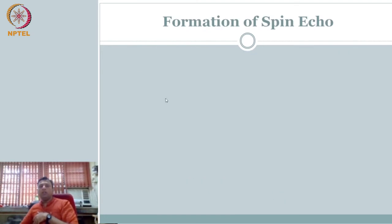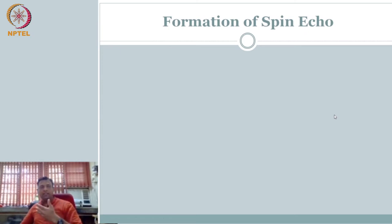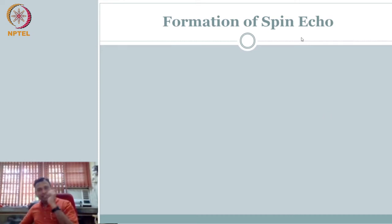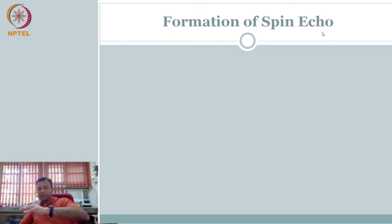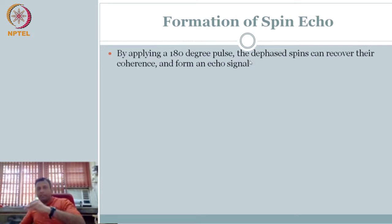So we are going to talk about the formation of spin echo. The new term here is echo — what is an echo? Echo is a reflection; it is a repeat of the signal. So spin echo means I have a signal from spin echoed again — meaning the signal is going to go down, and I am trying to make it come back and record it again. So by applying a 180-degree pulse, the dephased spins can recover coherence and form an echo signal.